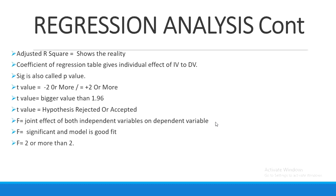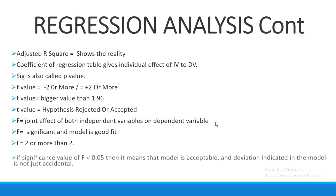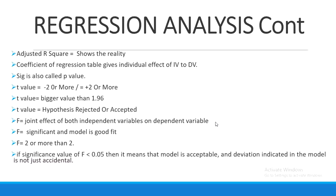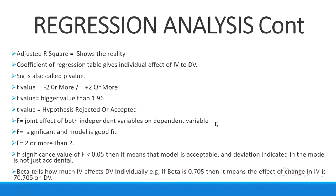The F-value should be two or more — it can be 200, 300, or 400. The higher the value, the better it shows the model is a good fit. If the significant value of F is 0.05 or less than 0.05, then the model is acceptable and the deviation indicated in the model is not accidental. This means your results are significant, your variables' relationship is significant, and your collected data is reliable.